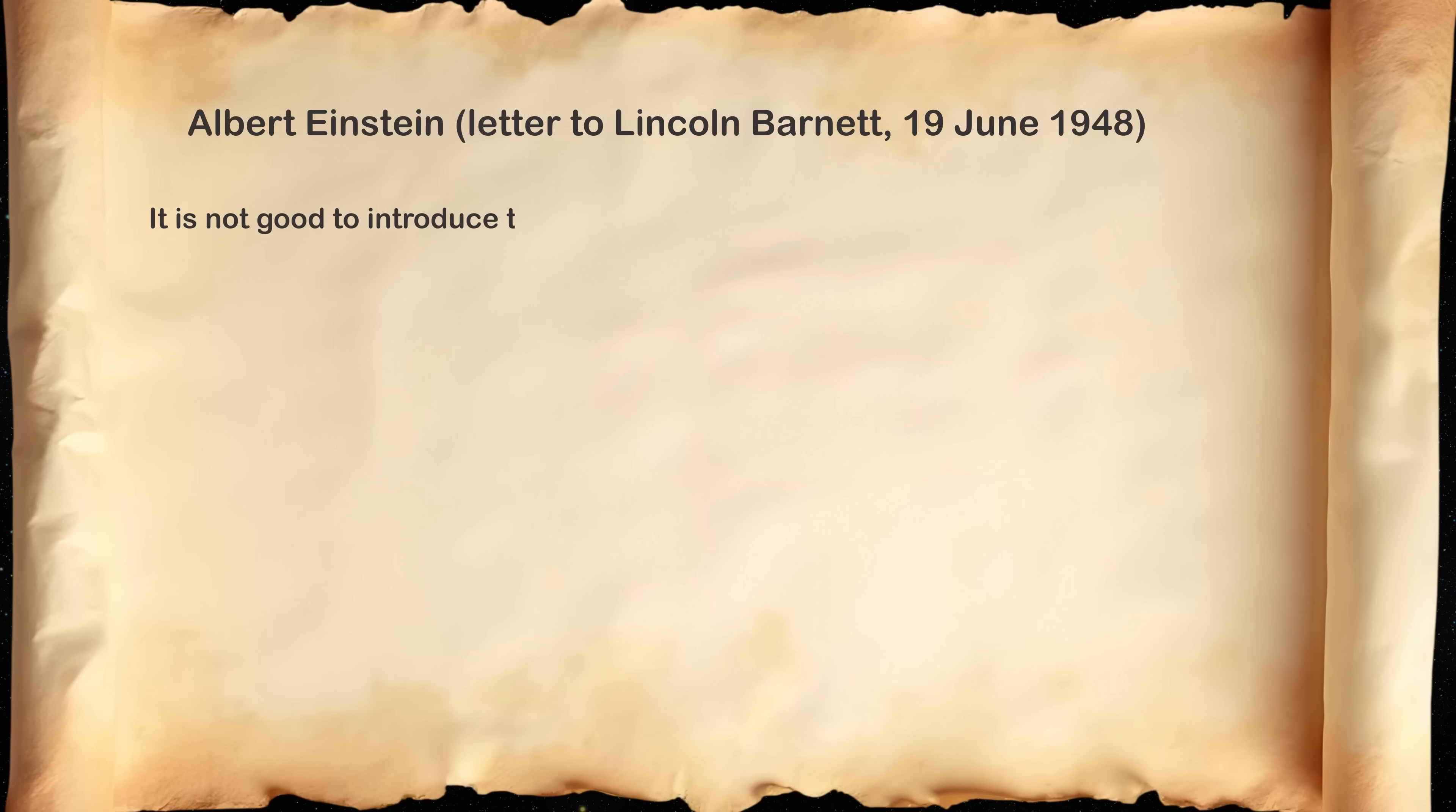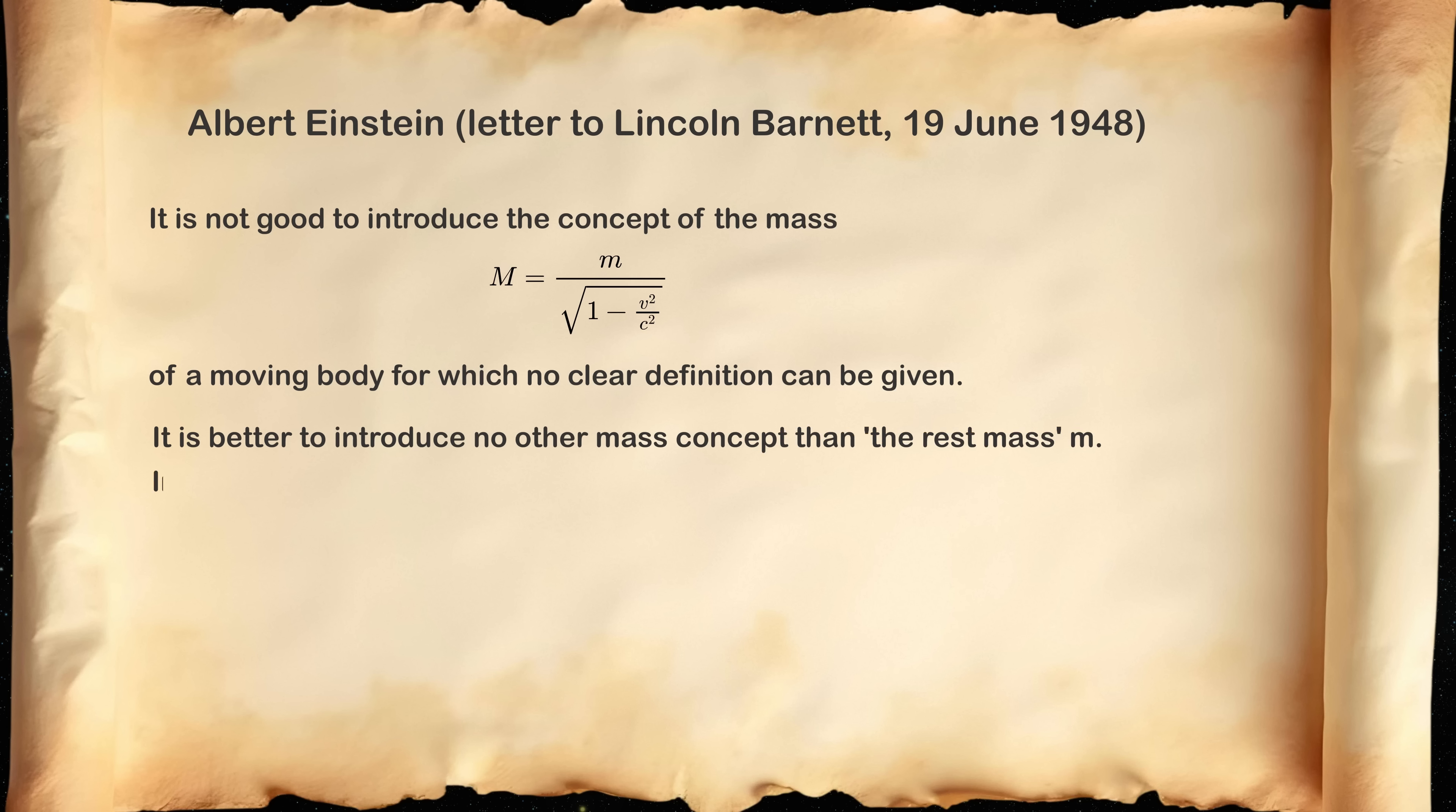And now back to the video. So we see that there is a huge problem if you take the relativistic mass too literally. And its introduction was one of the most unfortunate things in special relativity. And it created only more confusion than clarity. It is not good to introduce the concept of mass capital M equals to gamma M of moving body, energy for which no clear definition can be given. It is better to introduce no other mass concept than the rest mass M. It is better to mention the expression for momentum and energy of the body in motion.